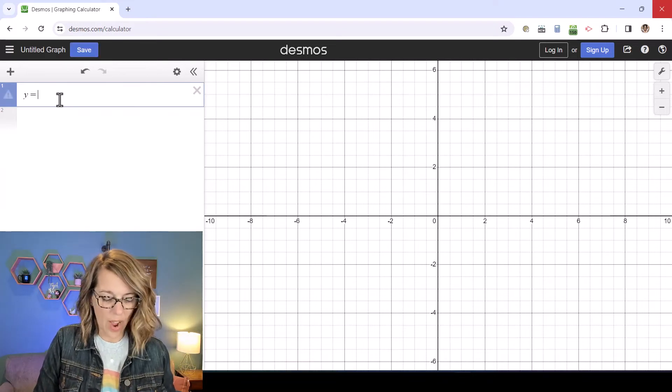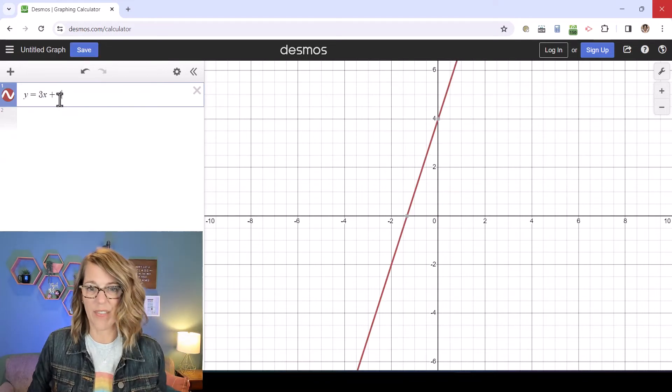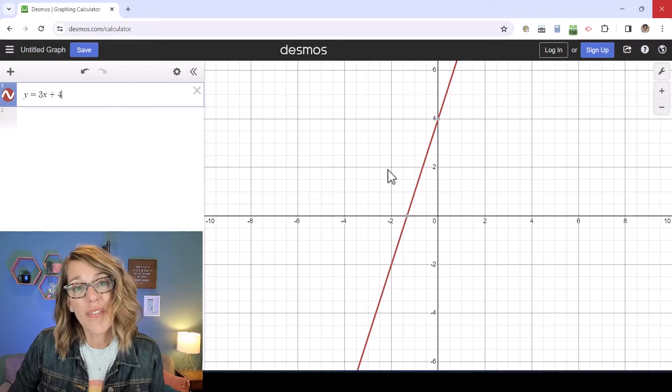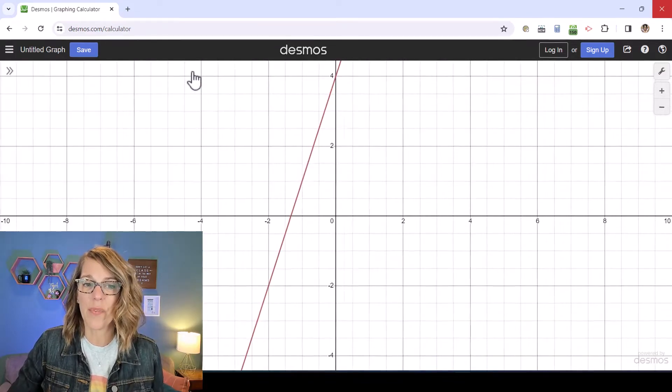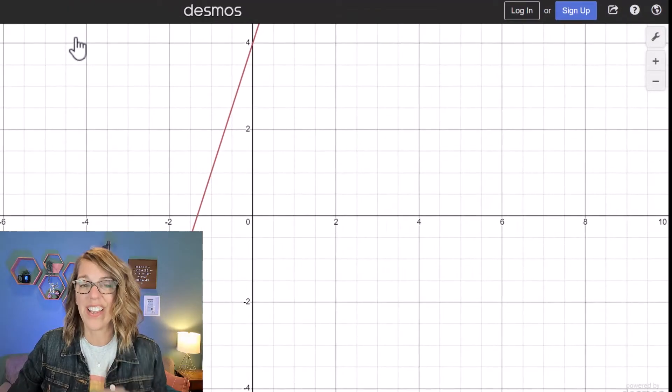Let's start by graphing the line y equals 3x plus 4. So I've got the line over here on the right hand side. I can click these double arrows if I want to focus in more on that graph.